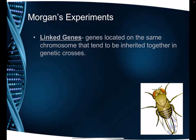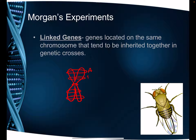Remember, autosomes are non-sex chromosomes — in humans, the first 22 pairs, not that last sex chromosome pair. Linked genes are genes that are located together on the same chromosome. If we draw a chromosome, it's going to look something like this, and you've got lots of genes on that chromosome. I'm going to label these A, B, C, D, and E — those are the genes that are on this chromosome.